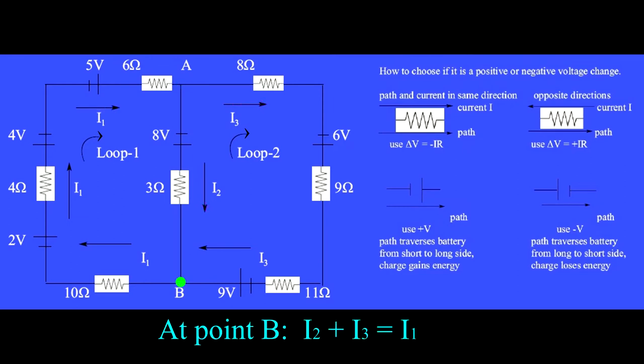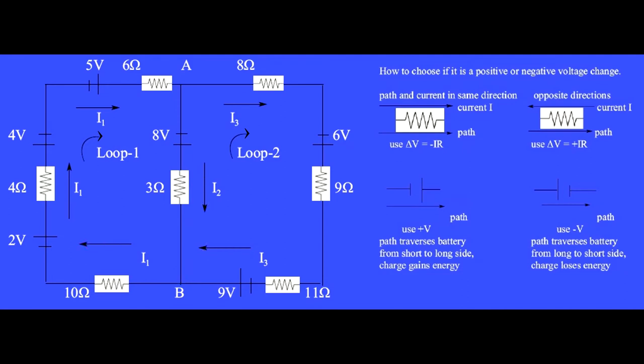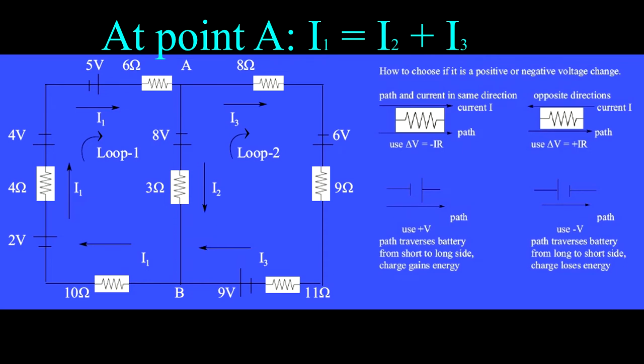At point B, the current arrows that point inward toward point B are I2 plus I3. The arrow for current I1 points away from point B. Again, we have I1 equals I2 plus I3, which is no new information. But we do have one equation so far for our three unknowns.